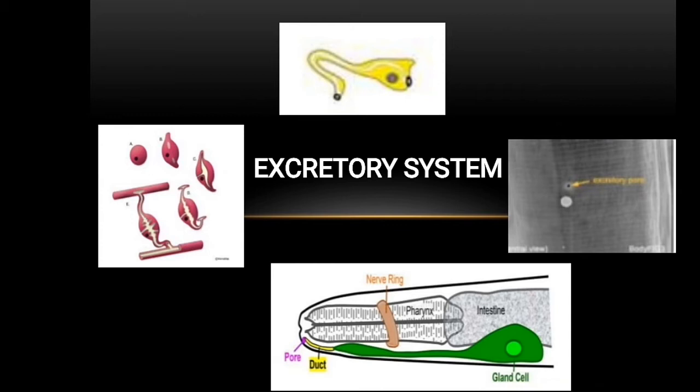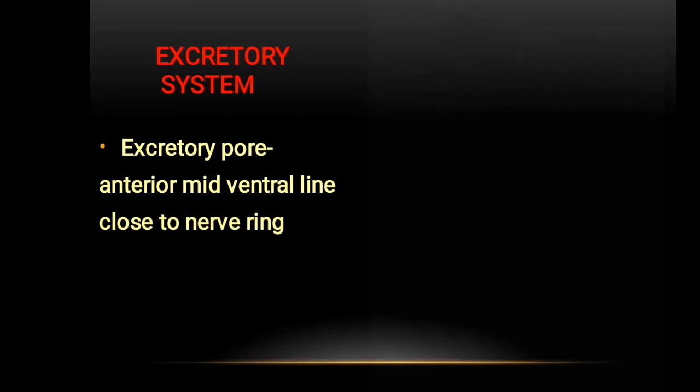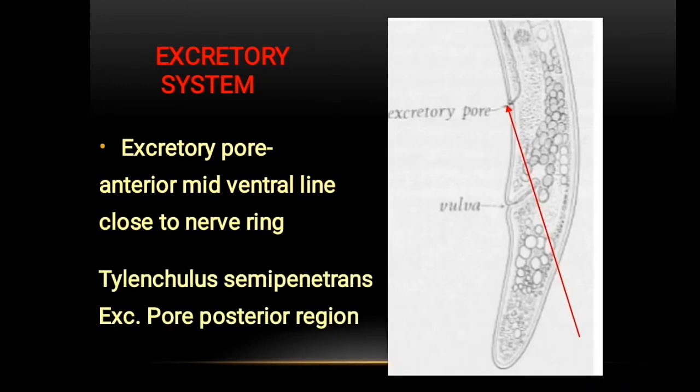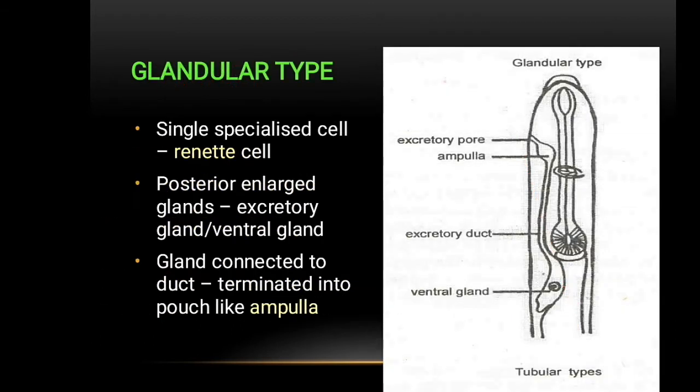Next we talk about the location of the excretory pore. The excretory pore is located in the anterior mid-ventral line, close to the nerve ring. However, in citrus nematodes it is located in the posterior region of the nematode body, as shown in the diagram.